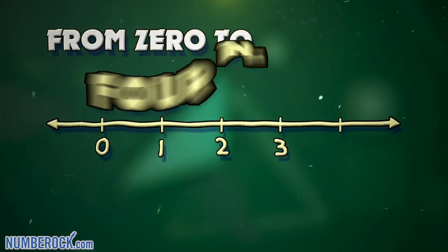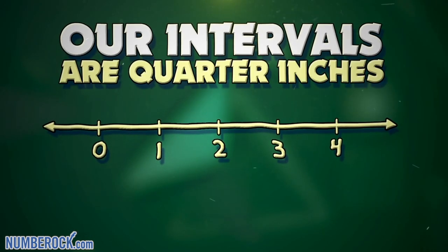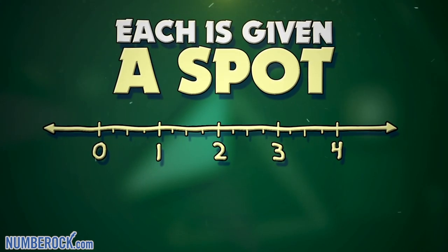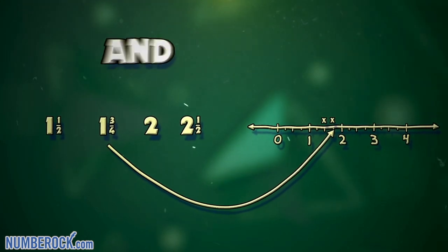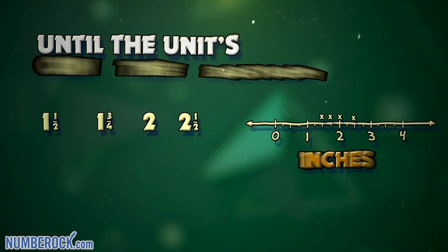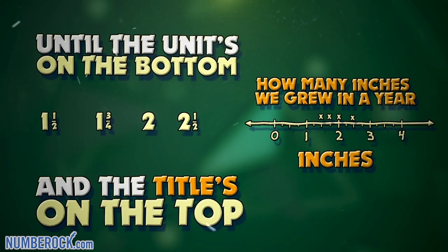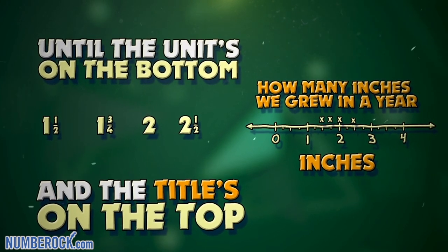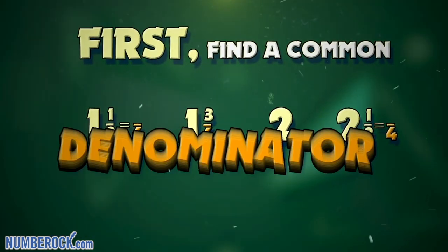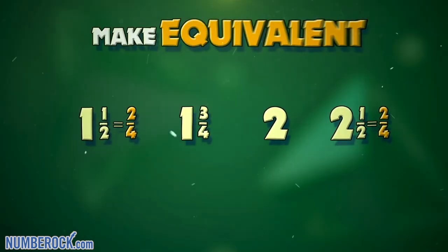From zero to four inches we'll draw the line plot. Our intervals are quarter inches, each is given a spot. We'll plot each data point and we won't stop until the units on the bottom and the titles on the top.